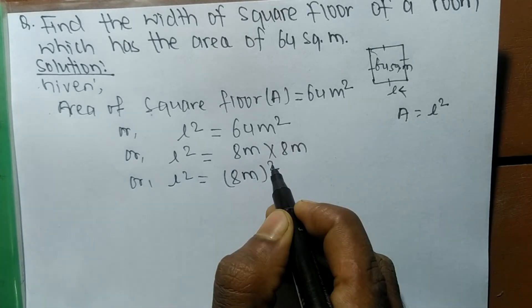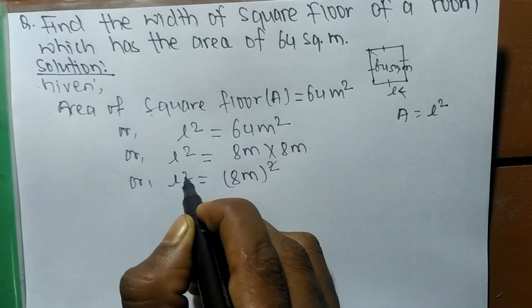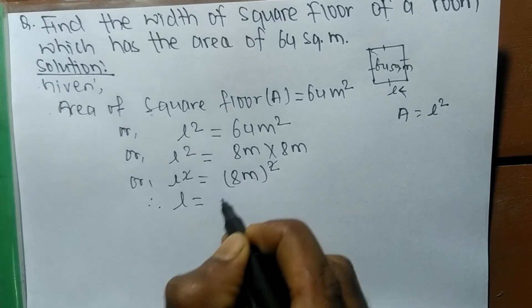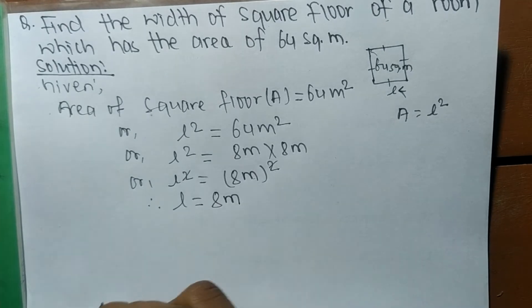So we can cancel the same power, therefore L is equal to 8 meter.